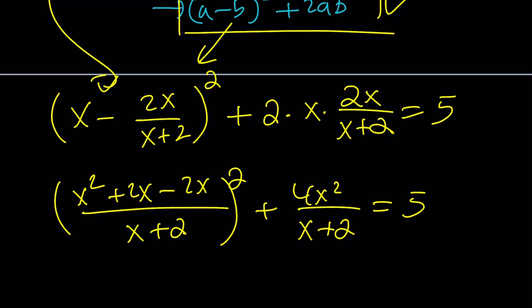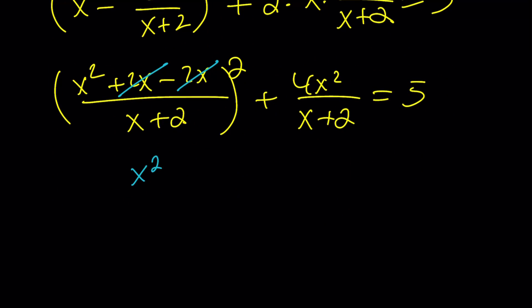Now, notice that here the 2x cancels out, leaving us with (x²/(x+2))² + 4·(x²/(x+2)) = 5. I hope this makes sense. If it doesn't, let me put this in parentheses. Does it make sense? Yes.